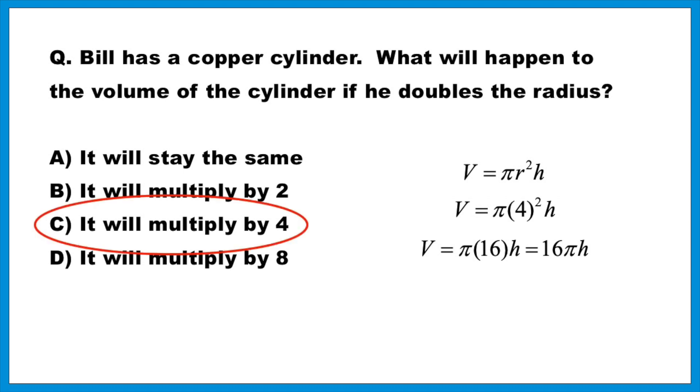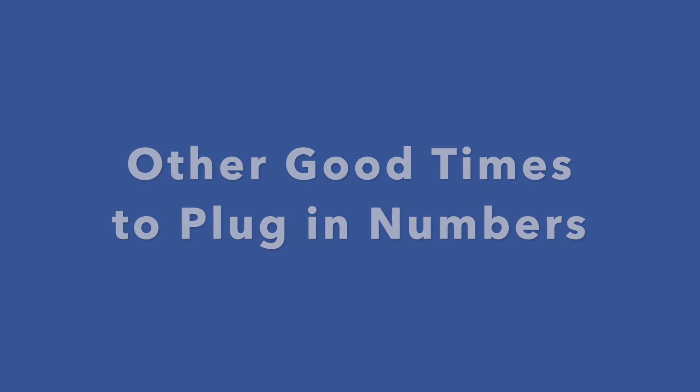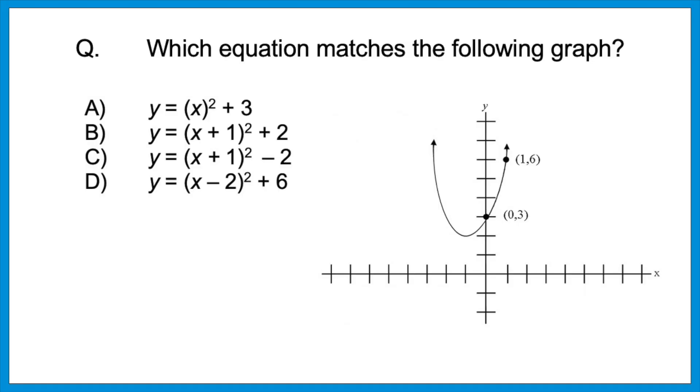This brings up an important point from the SAT and ACT — terms won't always have a linear relationship. In other words, just because you double one thing doesn't automatically mean that you double another thing. This is especially true with measurements like area and volume. So a great trick here is to pick numbers — it's a great way to sidestep complicated algebra or abstract thinking. Let's look at another variation where picking numbers is useful. Which equation matches the following graph? Just like the last question, you can pick numbers — and look at the graph, they're telling you what numbers you could pick.